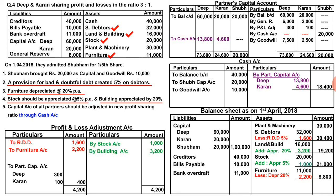The partners' capital accounts are now closed. Moving to close the cash account: cash account debit side total is 70,000. Deducting the amounts paid out — Deep 13,800 and Karan 4,600 totaling 18,400 — from 70,000 gives a cash balance of 51,600. Cash balance comes to the credit side and is always shifted to the asset side of the balance sheet.